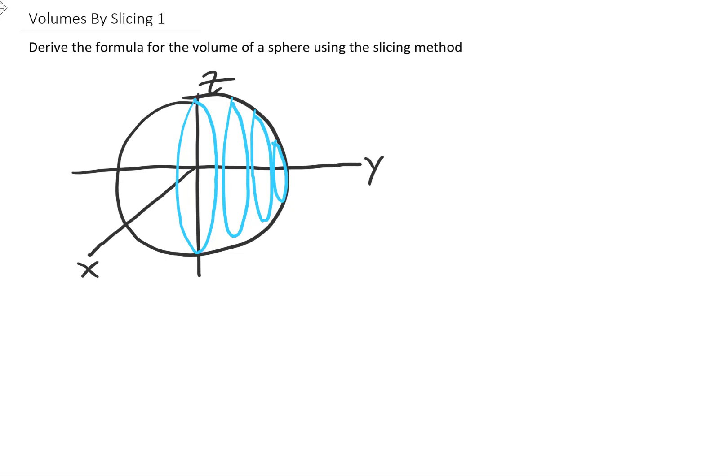Now I call these circles, but really we're going to think of each one of these as an infinitesimally thin cylinder. And since this is the y-axis, we can call the width of each one of these cylinders dy.